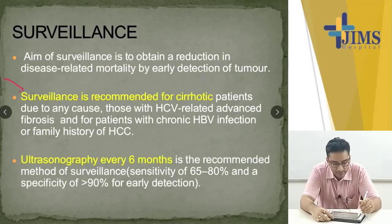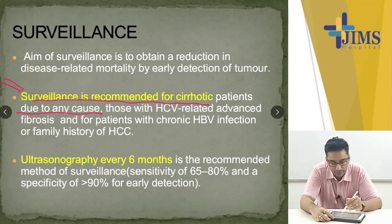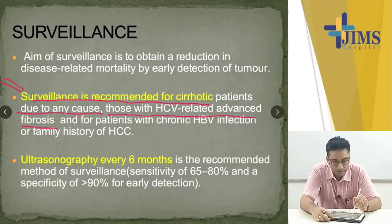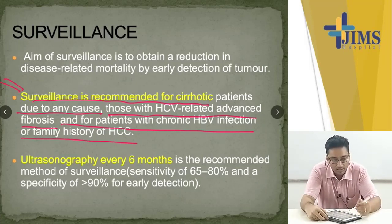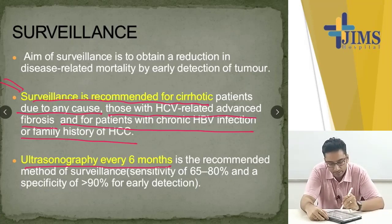Surveillance is recommended for cirrhotic patients due to any cause, those with HCV-related advanced fibrosis, and for patients with chronic HBV infection or family history of HCC. Ultrasonography every six months is the recommended method of surveillance.